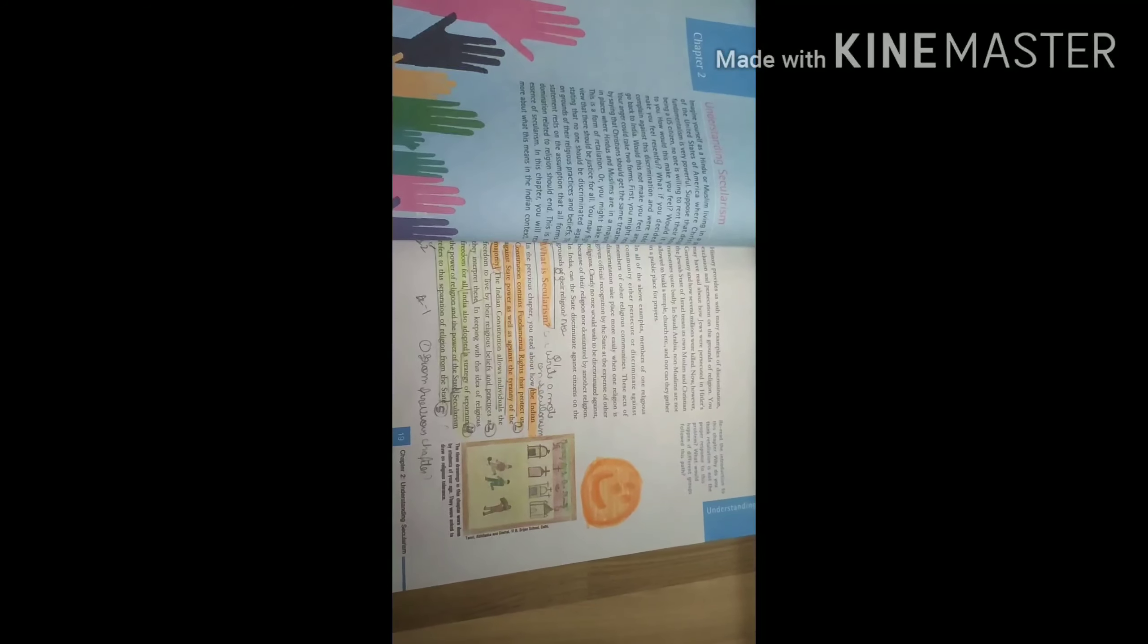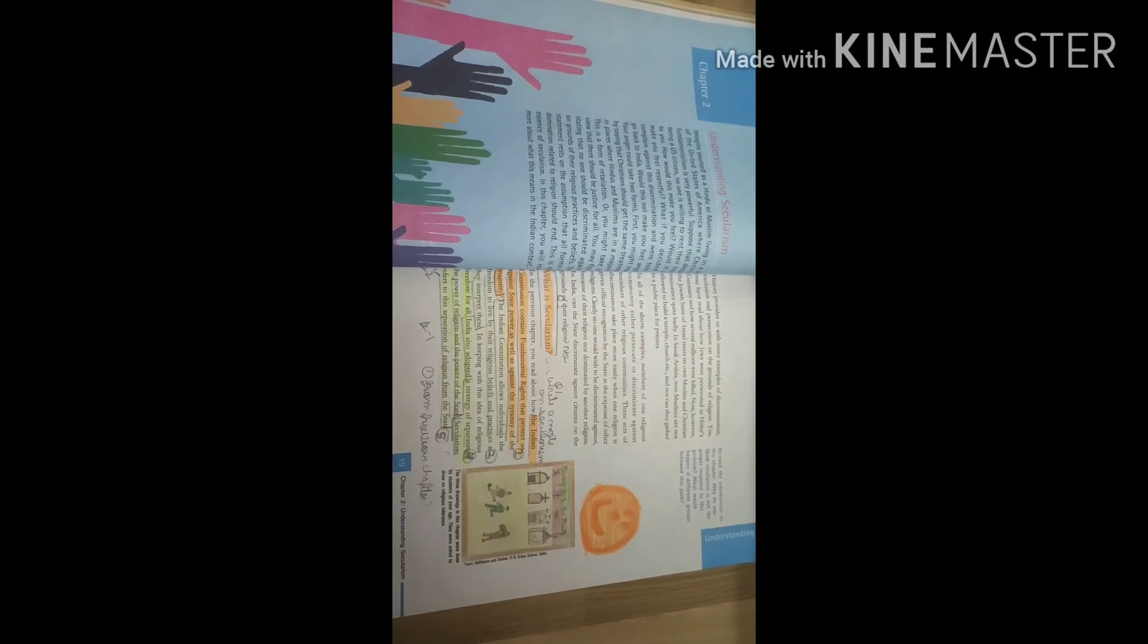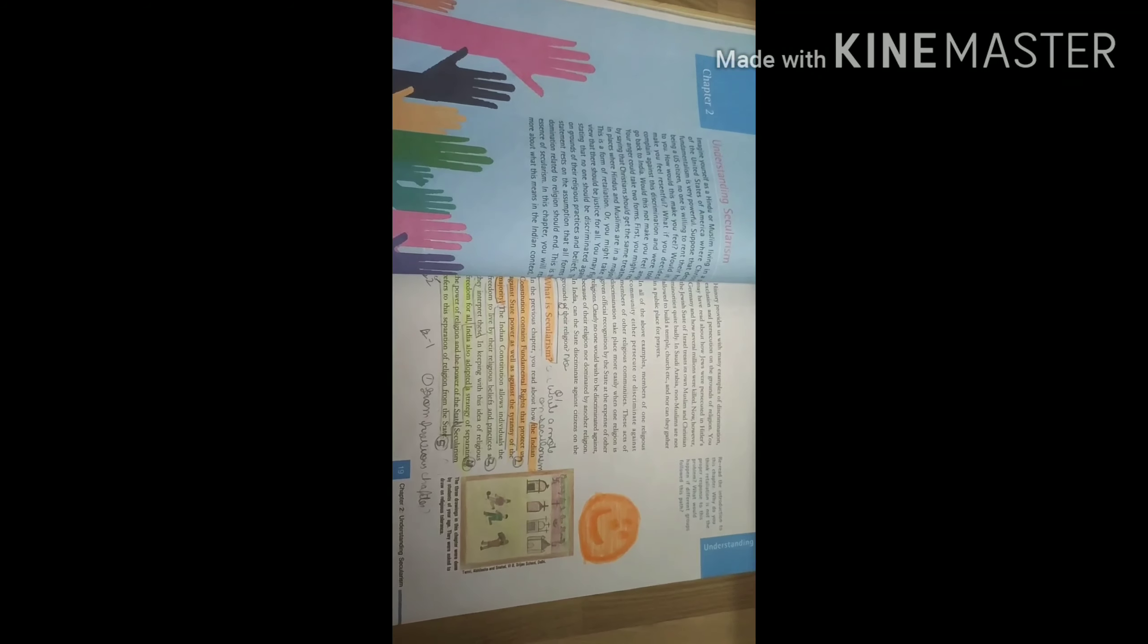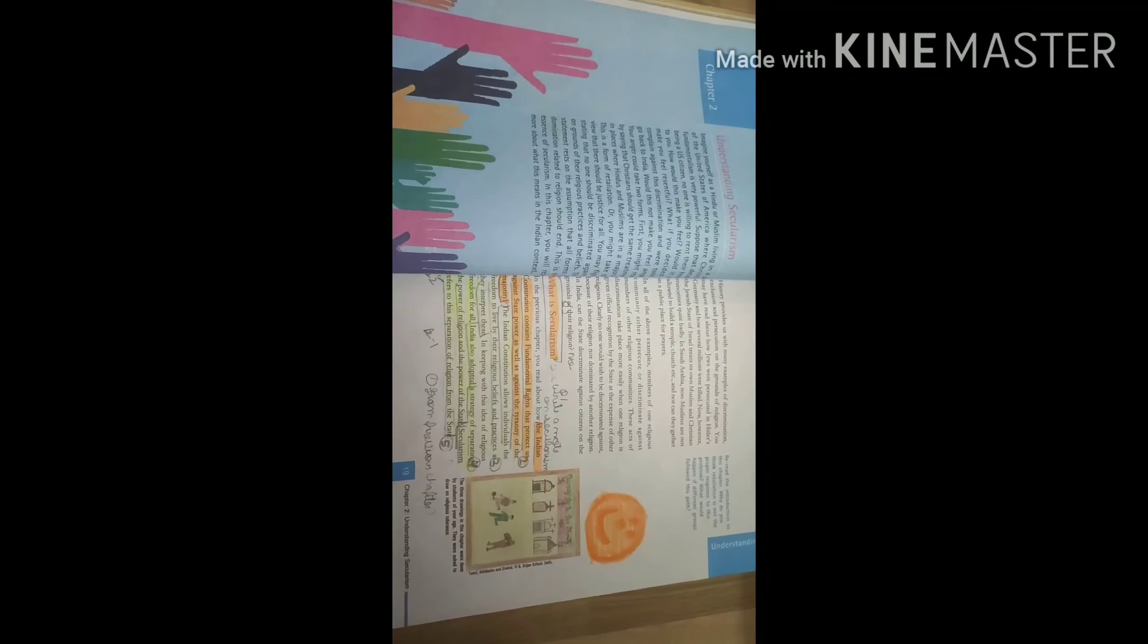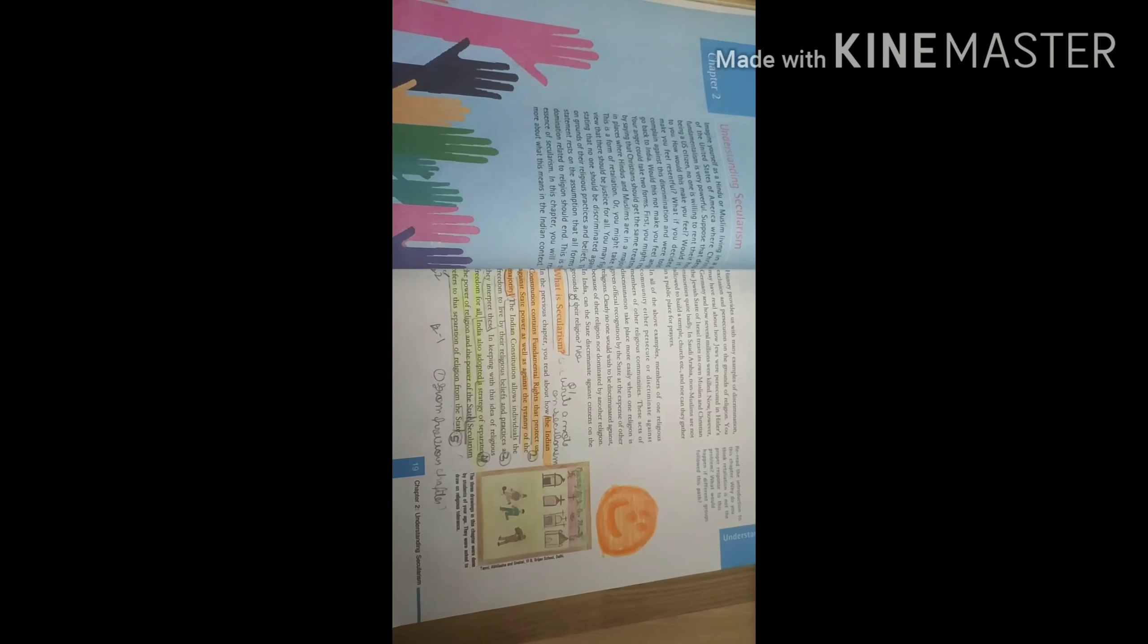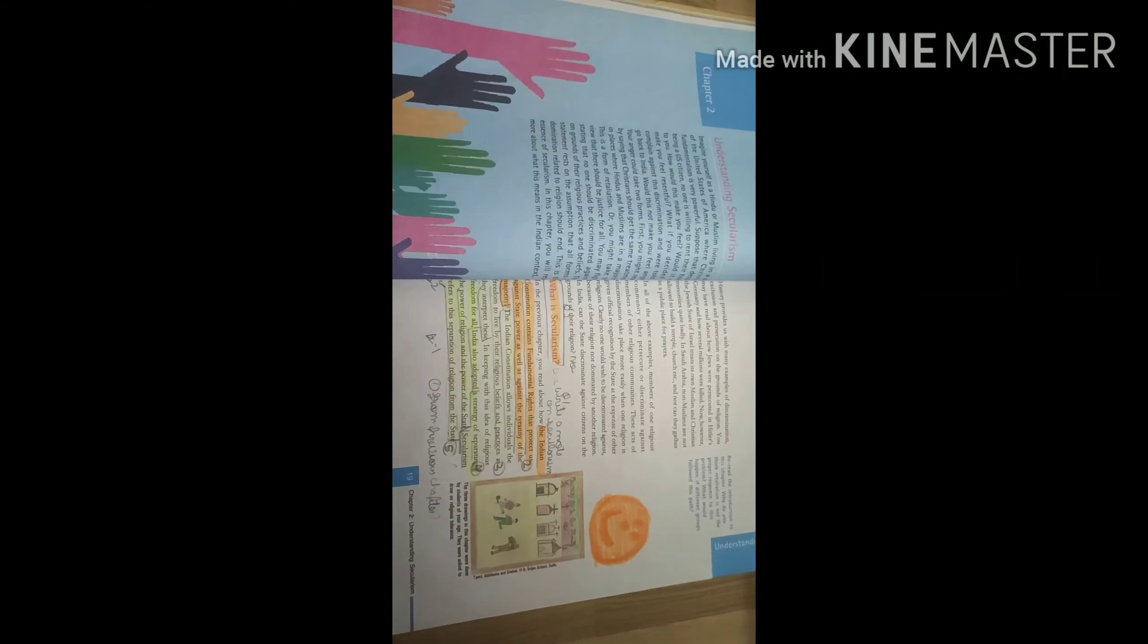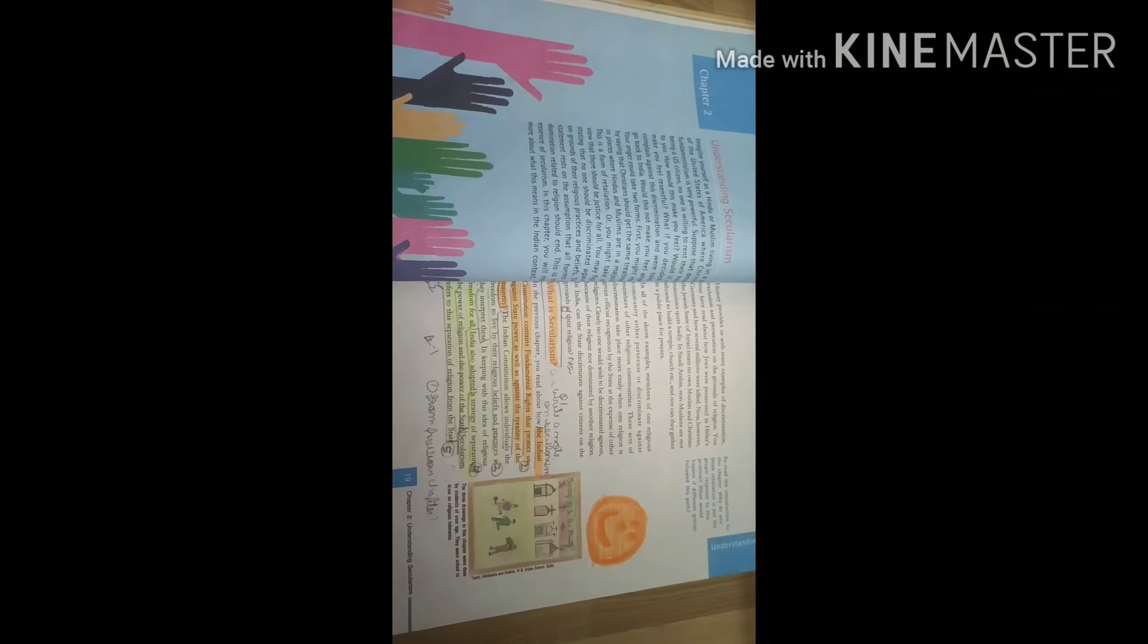Good morning children. Today we are going to start with the second chapter of civics, that is understanding Secularism. We know in the previous chapter when we did the important features of the Constitution, the last point what we discussed was Secularism. So what is Secularism?